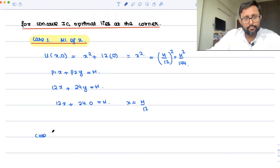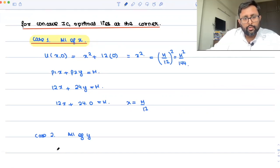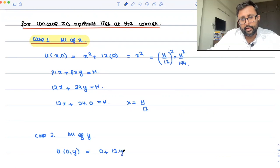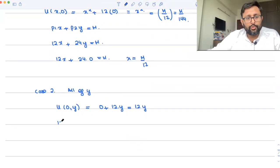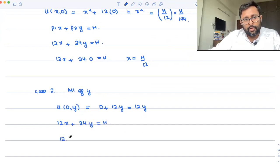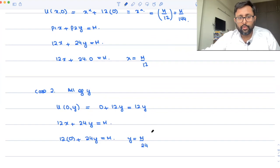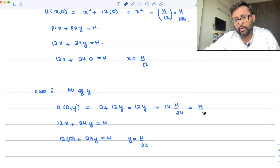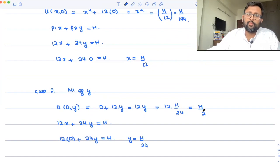Case 2: all of y, meaning the basket is (0, y). Utility becomes 0 plus 12y, which is just 12y. The budget line is 12x plus 24y equals m. Consuming no x gives 24y equals m, so y equals m over 24. Substituting back, utility equals 12 times m over 24, which equals m over 2.